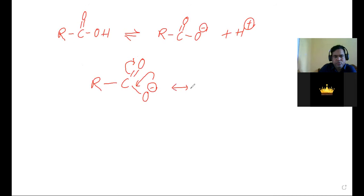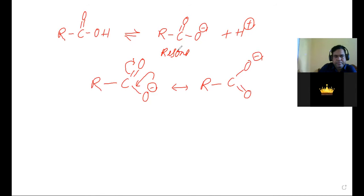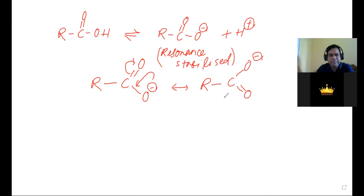The carboxylate ion gives two equivalent resonating structures and is resonance-stabilized. That is why carboxylic acid readily gives H⁺ to form the resonance-stabilized carboxylate ion.